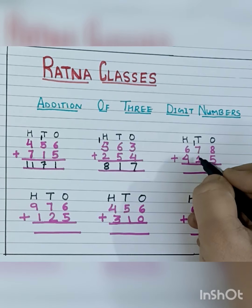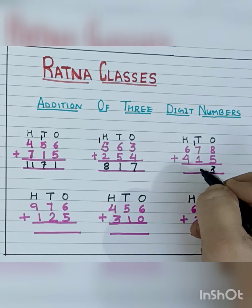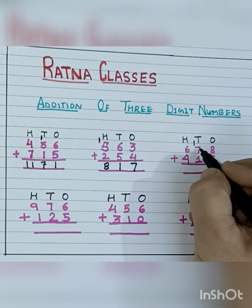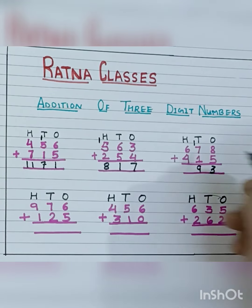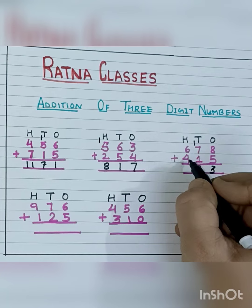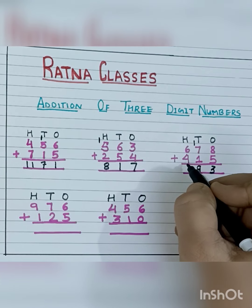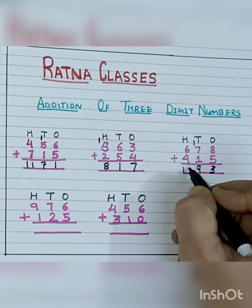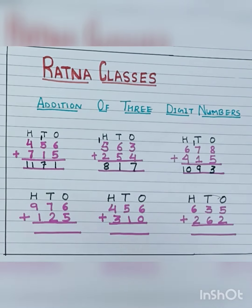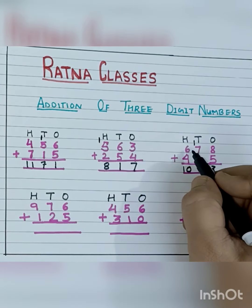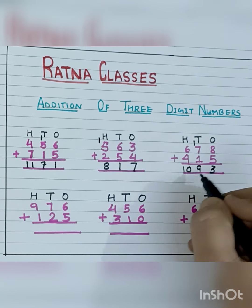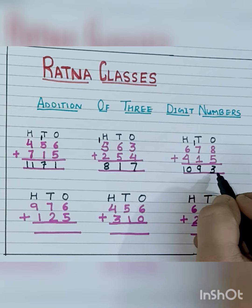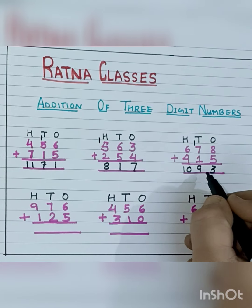Now let's add the 10's place numbers. 7, 8, 9 — so we write 9 here. Now 6 plus 4 — 6 plus 4 is 10. So we write 10. Our answer is 678 plus 415 is 1093: 1, 0, 9, 3.